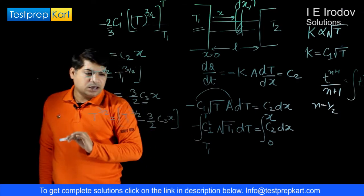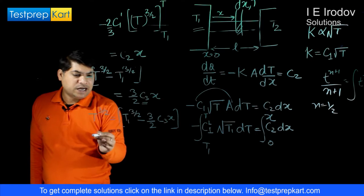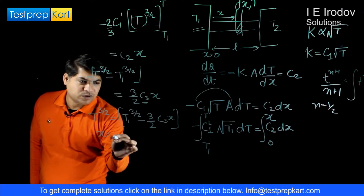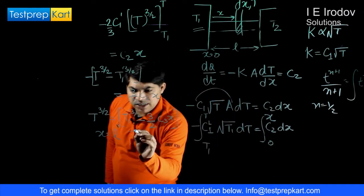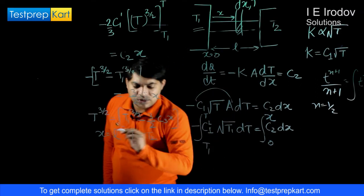Expression for T is T to power 3 by 2 is equal to T1 to power 3 by 2 minus 3 by 2 into C3 into x. Here we can apply the boundary condition that when x is equals to L, this distance, then temperature T is equal to T2.